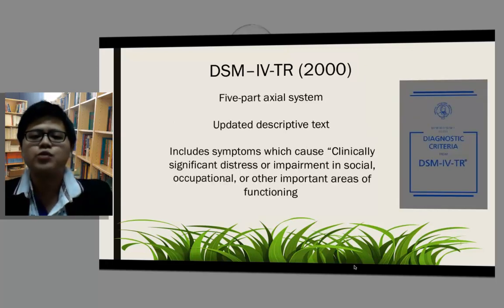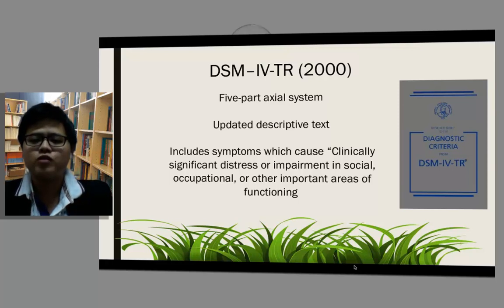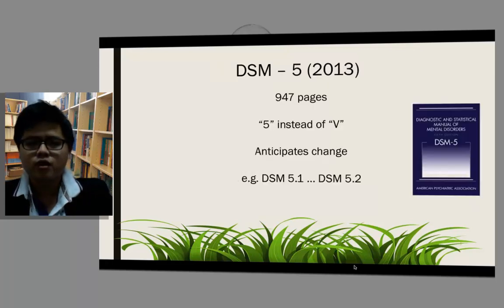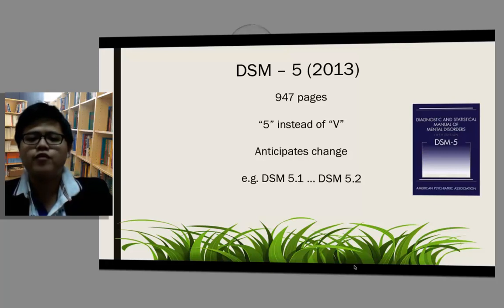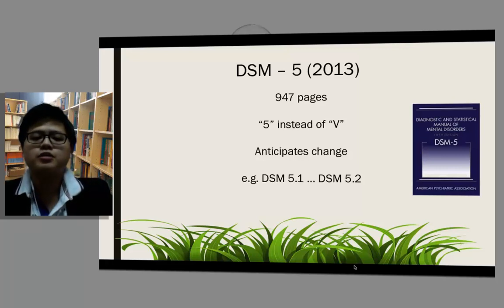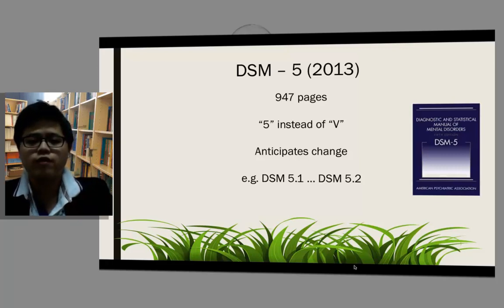For DSM-4 Text Revision, it was published in 2000. It first introduced the five-part axial system and has the descriptive text updated. DSM-4-TR includes a very important diagnostic criterion — clinically significant distress or impairment in social, occupational, or other important areas of functioning. Now we have DSM-5, published in 2013. It has 947 pages and uses the number 5 instead of the Roman numeral V, meaning we can anticipate future incremental changes such as DSM-5.1, 5.2, 5.3, and so on.